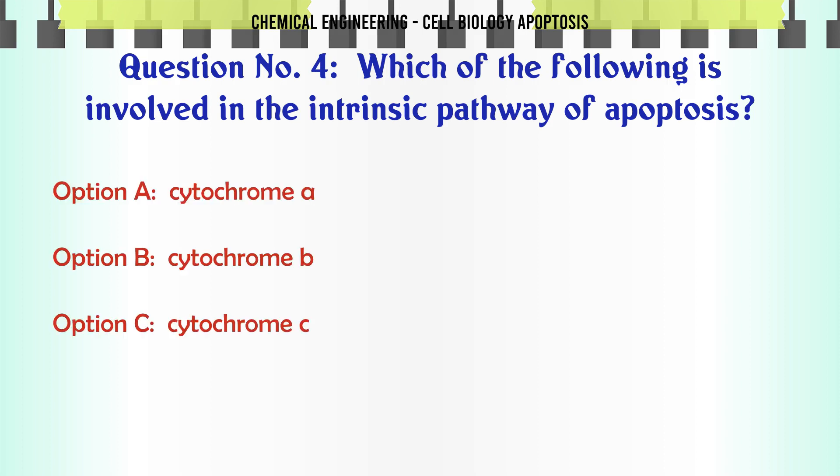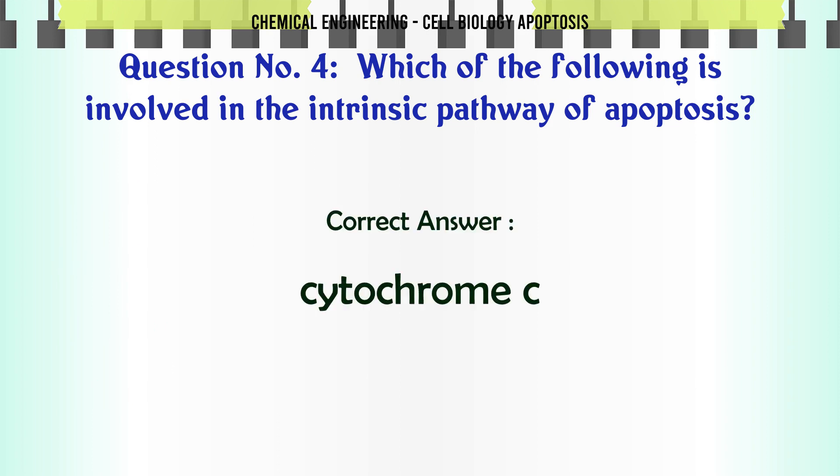Which of the following is involved in the intrinsic pathway of apoptosis? A. Cytochrome A, B. Cytochrome B, C. Cytochrome C, D. Cytochrome D. The correct answer is Cytochrome C.